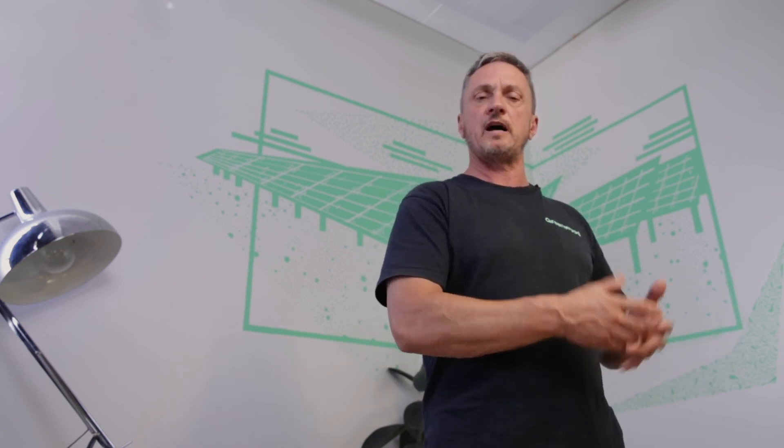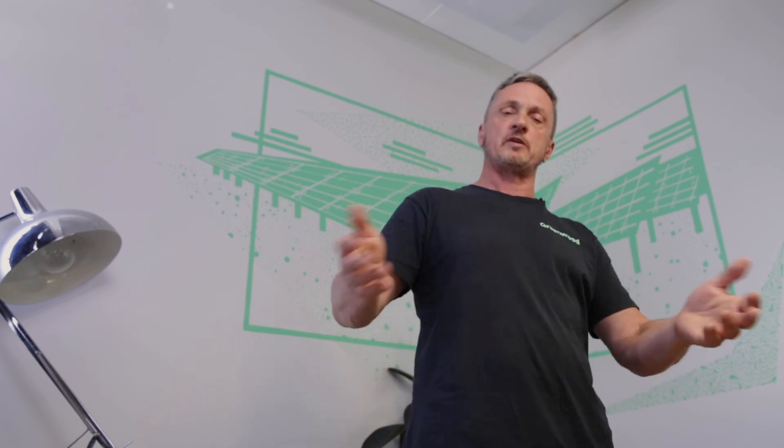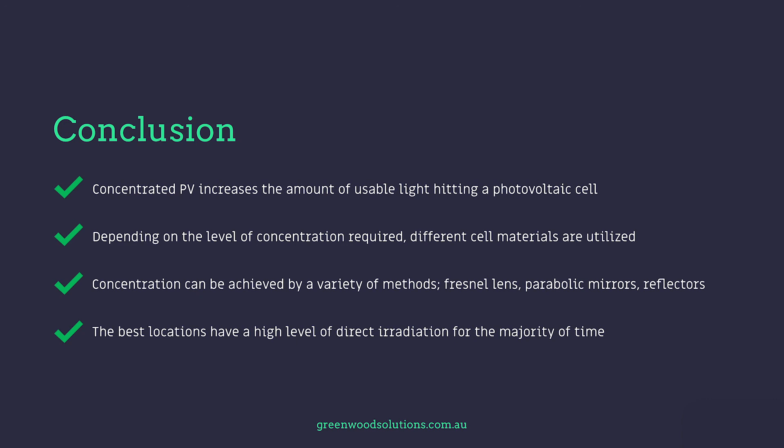Concentrated PV is just another tool in the arsenal of someone looking to produce energy from the sun. Traditional PV ground-mount systems seem to be the more cost-effective way to go at this point in time, but time will tell. In conclusion: concentrated PV increases the amount of usable light hitting a PV cell; depending on the level of concentration required, different cell materials are utilised; concentration can be achieved by Fresnel lens, parabolic mirrors, or reflectors; and the best locations have a high level of direct irradiation for the majority of time. Thanks for watching — if you have any enquiries or questions, please drop us a line, hit that subscription button, and see you next time.